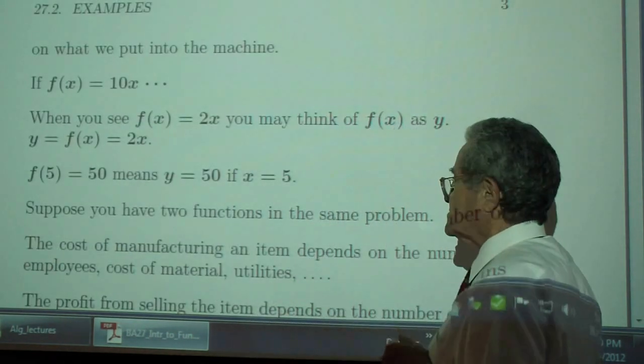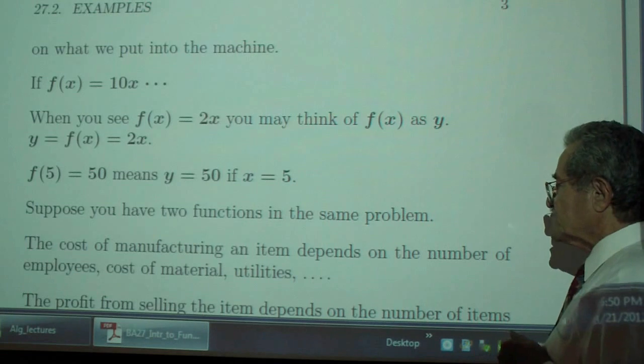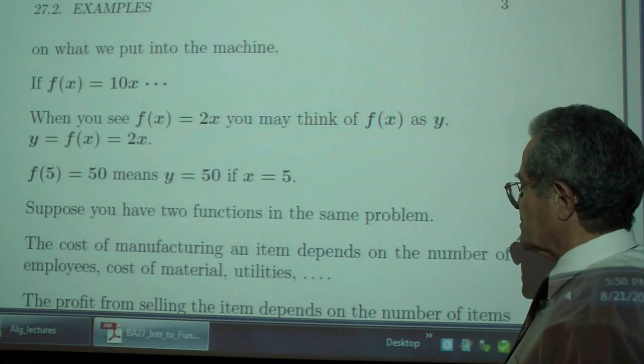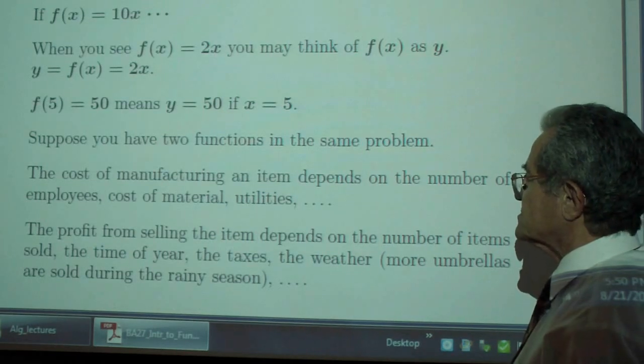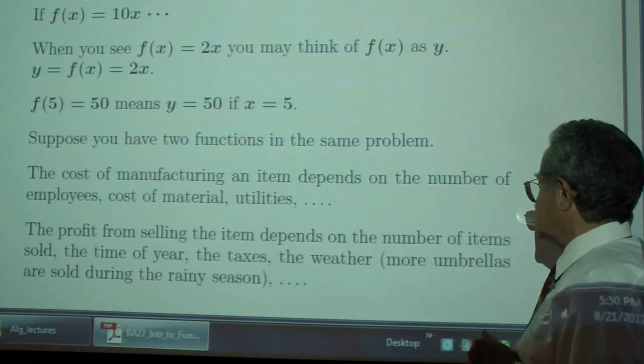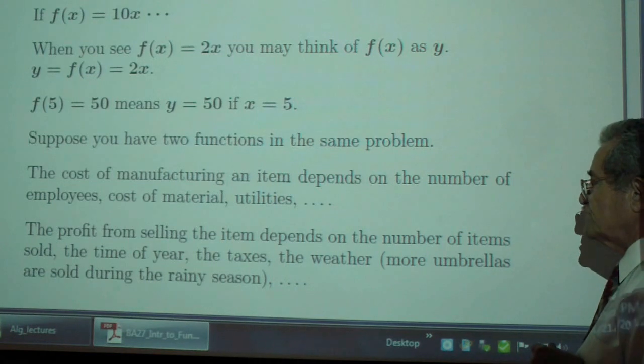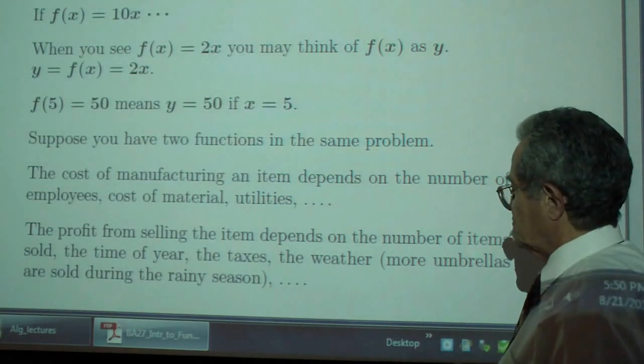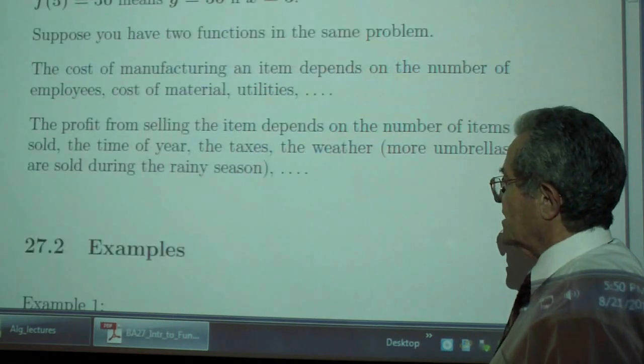Suppose you have two functions in the same problem. The cost of manufacturing an item depends on the number of employees, cost of material, utilities. The profit from selling the item depends on the number of items sold, the time of the year, the taxes, the weather. More umbrellas are sold during the rainy season and so on.